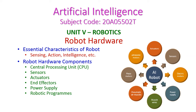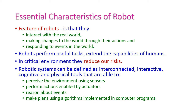In this artificial intelligence class we will see another important topic from the fifth unit: robot hardware. We will cover the essential characteristics of robots, followed by the important components — the central processing unit, sensors, activators, end effectors, power supply, and robotic programs. Although robotic programs are not actually a hardware component, we will also see their importance in robotics.